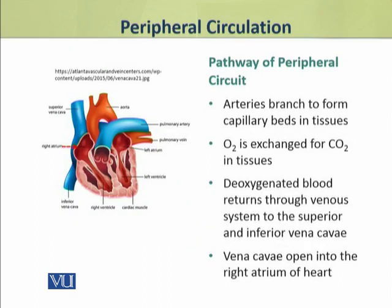The arteries branch to form capillary beds in tissues where oxygen and carbon dioxide exchange takes place. Deoxygenated blood returns through the venous system to the superior and inferior vena cava, which open into the right atrium of the heart.